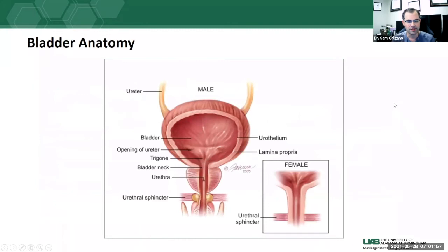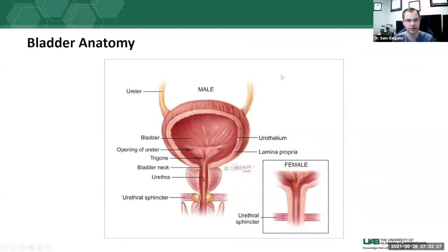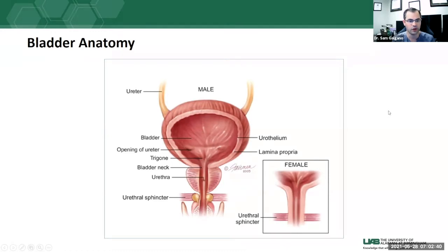Starting with the bladder — the bladder is located in the pelvis. The male and female bladder differ slightly owing to the lack of a prostate in females. The ureters insert at the base of the bladder at the ureteral orifice, converging to the trigone — named for being a triangle — which leads to the bladder neck, urethra, and ultimately the urethral sphincter. The bladder is a smooth muscle organ lined by urothelium, which is why most cancerous pathology arising in the bladder is urothelial in origin. Note that bladder muscles can also give rise to different tumors.